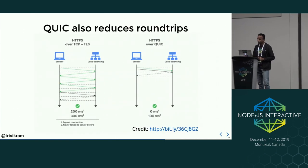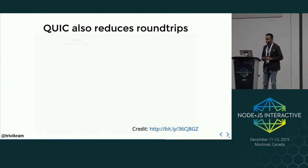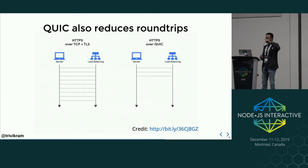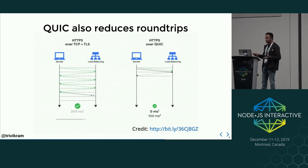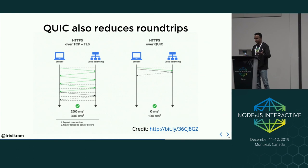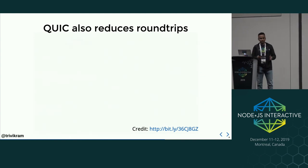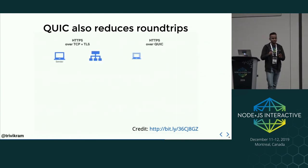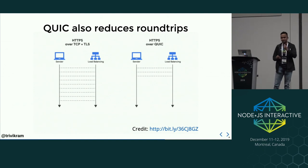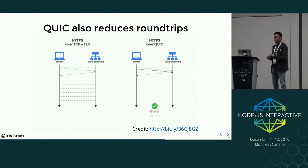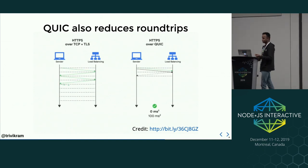QUIC also reduces round trips. Remember the three round trips per request we discussed. If each round trip takes 100 milliseconds, in QUIC it will take just 100 milliseconds for the first request, or if the client already knows the server, it will take 0 milliseconds.